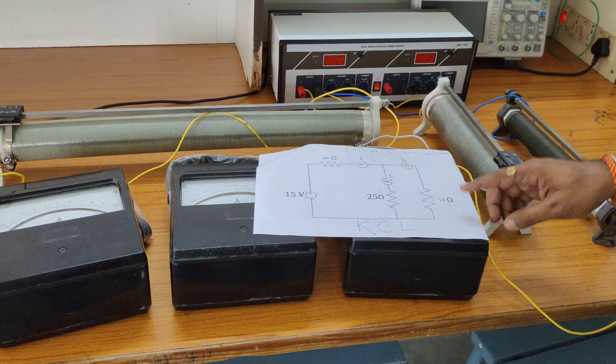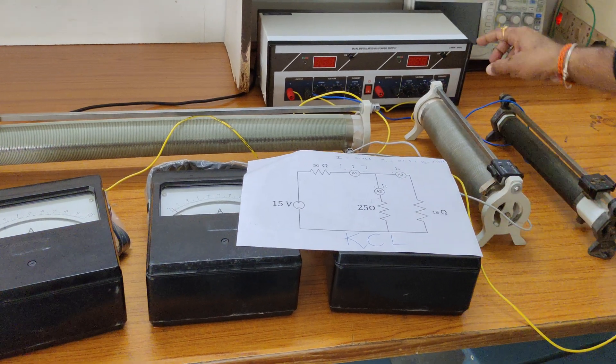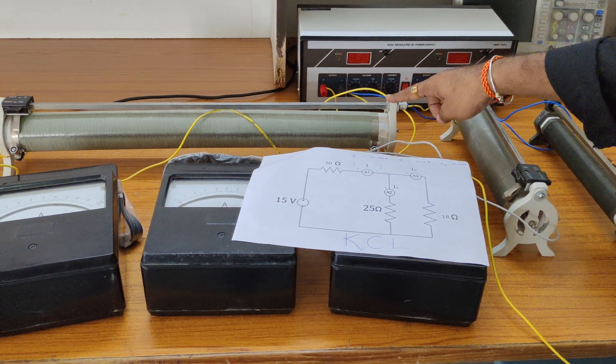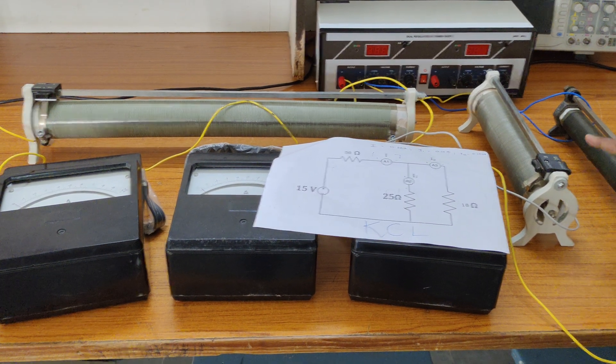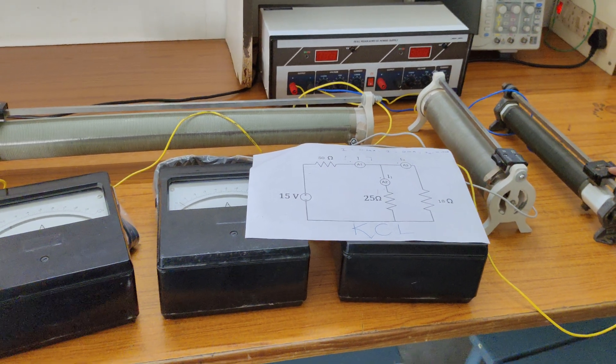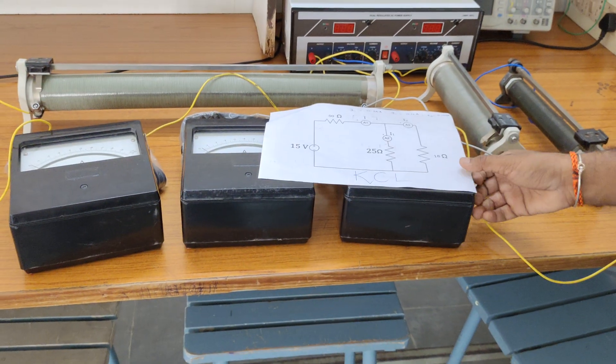We observe the connections with the help of this particular circuit. We have an RPS and three resistors. The first one is 50 ohms, followed by 25 ohms, and this one is 18 ohms. I want to apply KCL now. KCL stands for the algebraic sum of all the currents meeting at a junction or node equals zero.